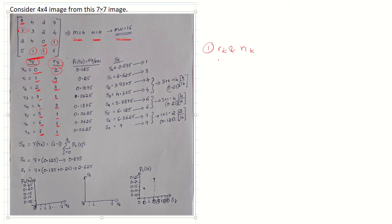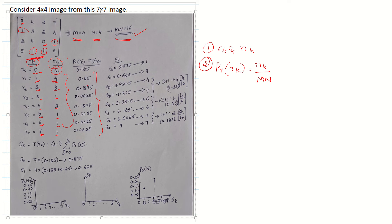The next step is finding PR(RK). The formula is NK divided by MN. Using the NK values and MN = 16, we get: 2/16 = 0.125, 4/16 = 0.25, 3/16 = 0.1875, 1/16 = 0.0625, 3/16 = 0.1875, 1/16 = 0.0625, 1/16 = 0.0625, 1/16 = 0.0625.